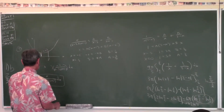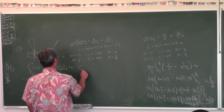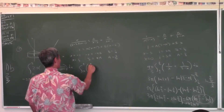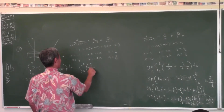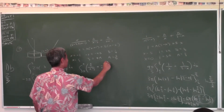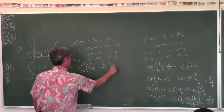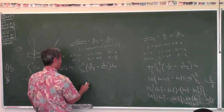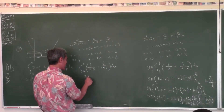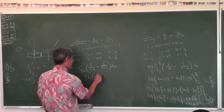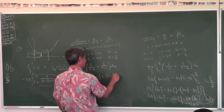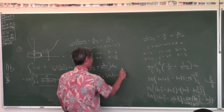So this integral is the same as the integral of (3/4) over (X minus 3) plus (1/4) over (X plus 1) dx, from 0 to 2.